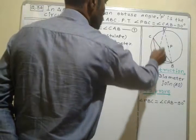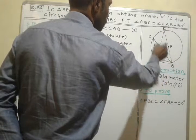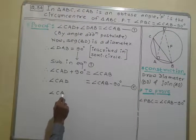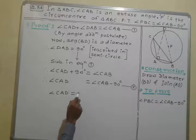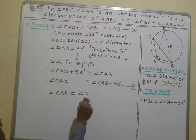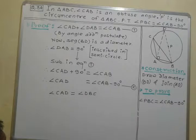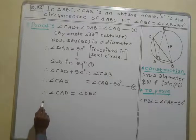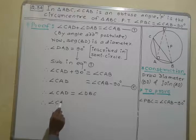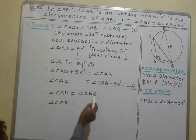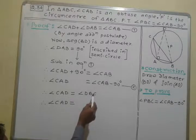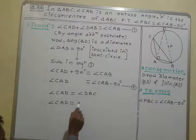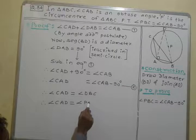Angle CAD and angle DBC intercept the same arc CD. I will change the name of this angle DBC. Angle CAD is equal to DBC. I will write here PBC. The names are different but the angles are the same.